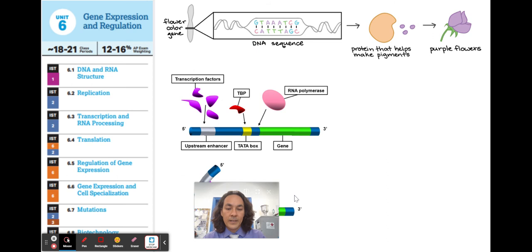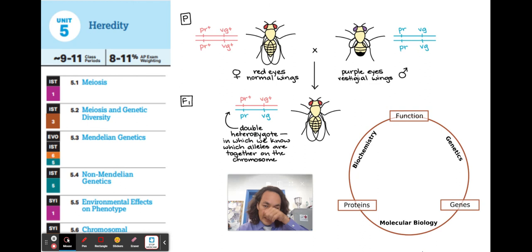One thing I neglected is this picture right here is really showing that units five and six heredity and DNA expression, and even unit one with biochemistry, they all tie together. They're all super interconnected. When we think about how proteins work and their function, that's biochemistry. When we think about genes coding for proteins, that's molecular biology. And when we think about passing on these traits, that is genetics.